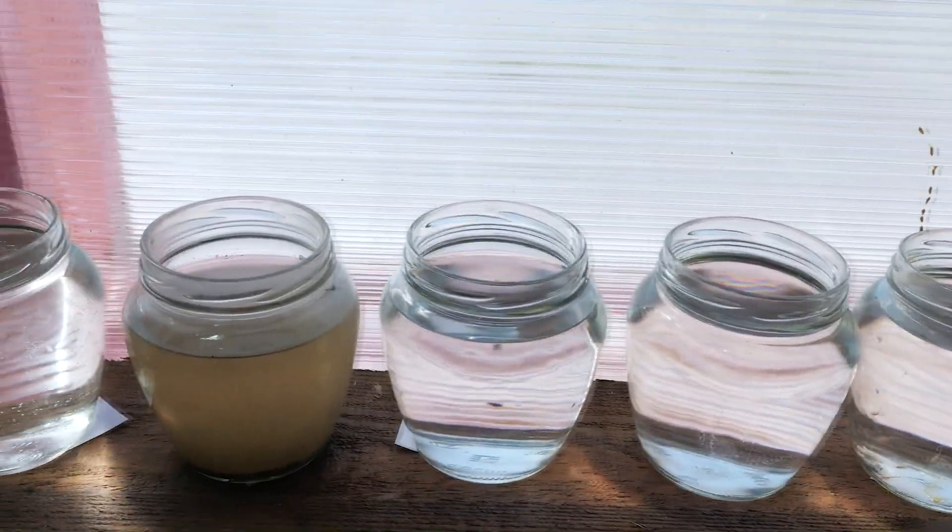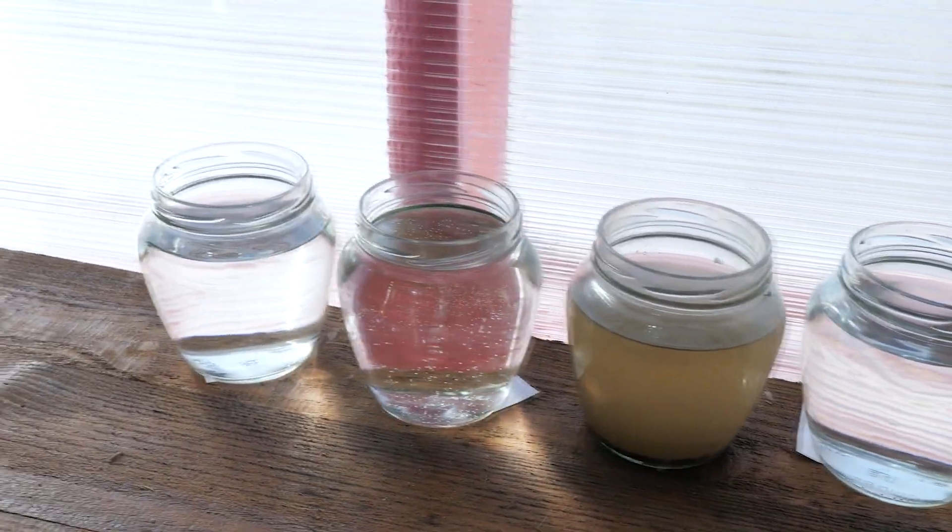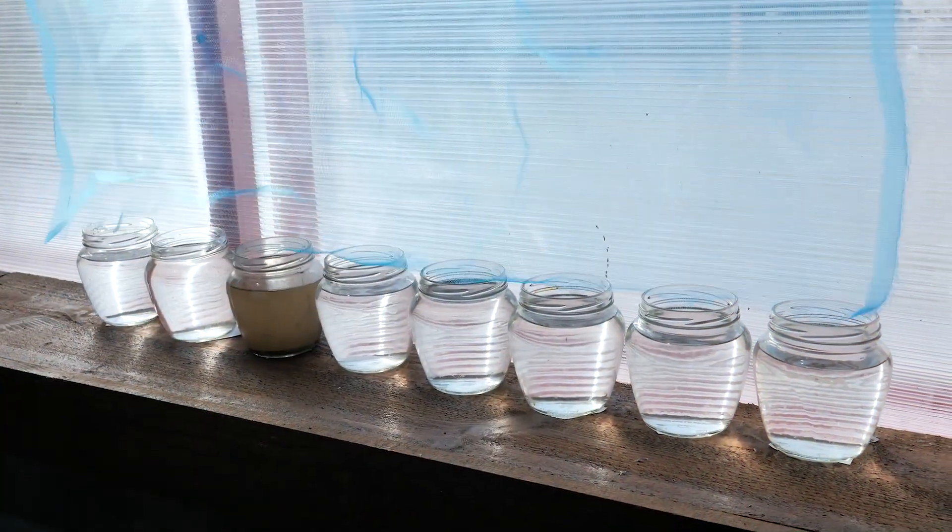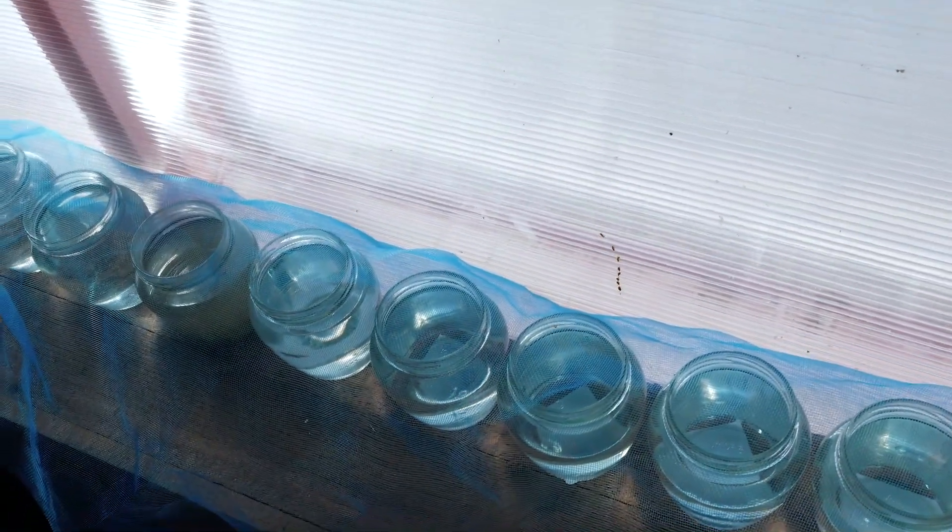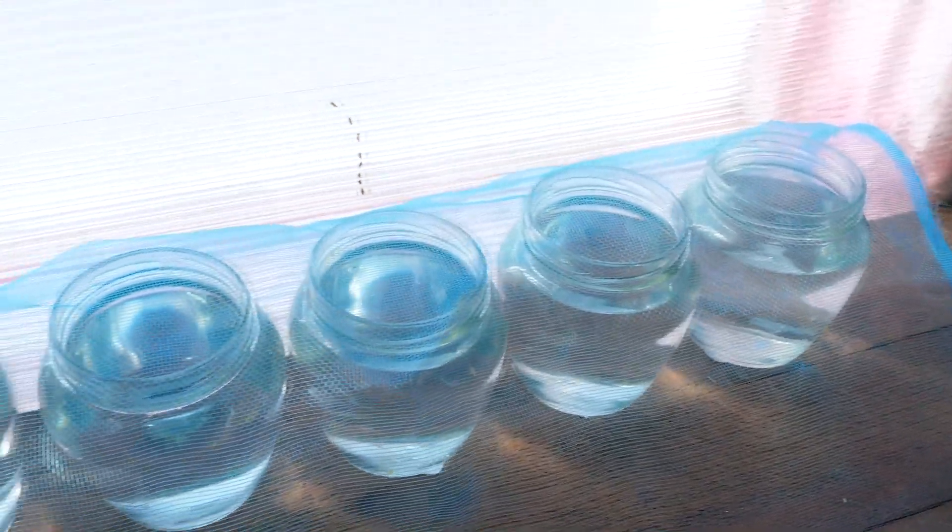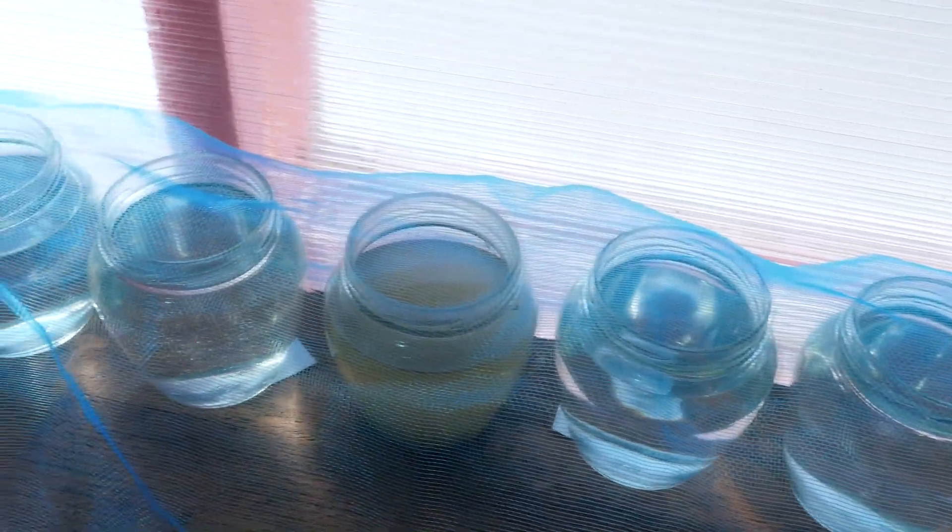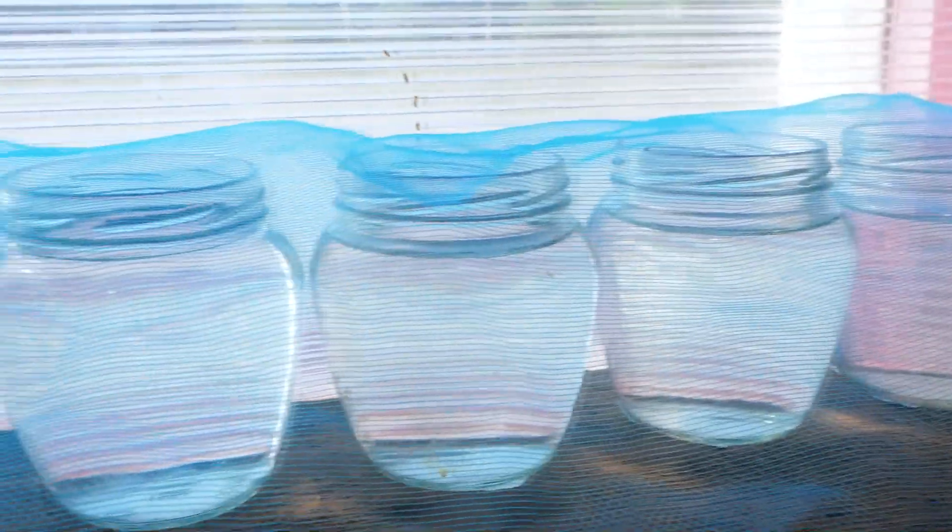We move all the samples to the windowsill. The organisms potentially living in water will receive a sufficient amount of sunlight. We cover all the jars with a mosquito net so that other living organisms, like flies, do not think of washing their feet here.